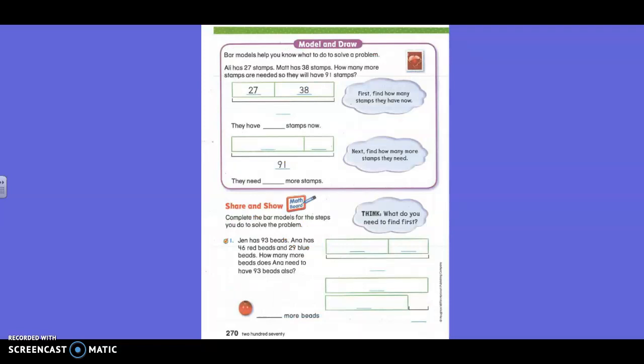Bar models help you know what to do to solve a problem. Allie has 27 stamps. Matt has 38 stamps. How many more stamps are needed so they will have 91 stamps? Oh, that's a two step problem. That's why you have two bar models. Okay. First, find how many stamps they have now. So obviously if we have the two box numbers in a box, what am I doing? Subtraction or addition? If I have the two numbers in the boxes, you guys see them, right? Is it subtraction or addition? Everyone? Addition. Good. So let's do that over here on the side of our paper.